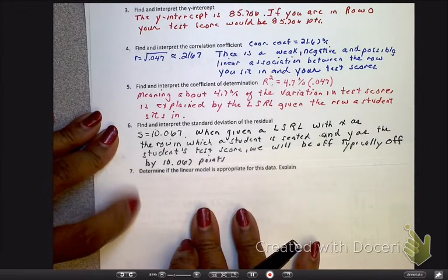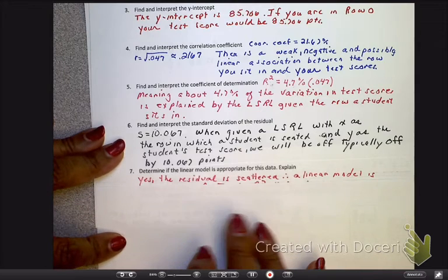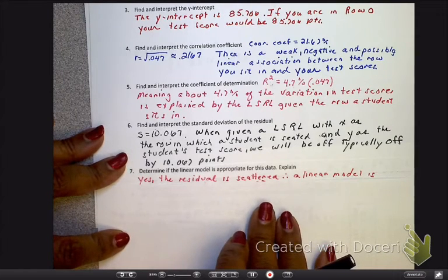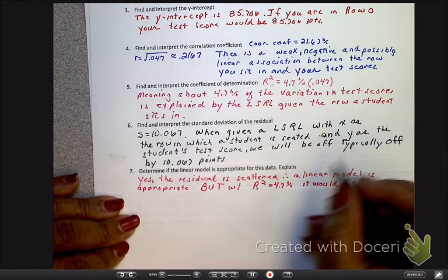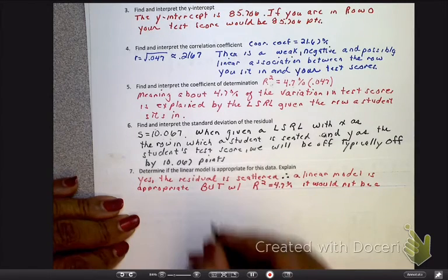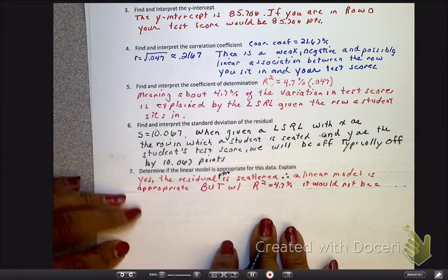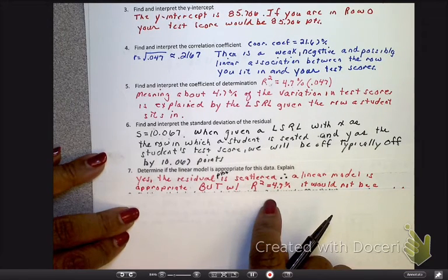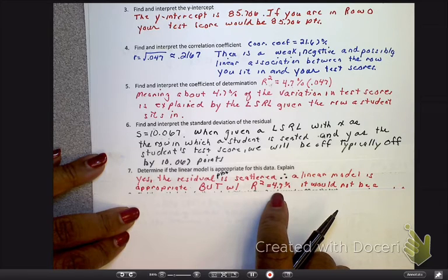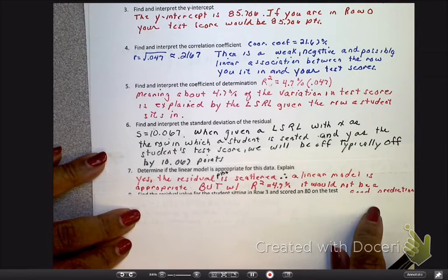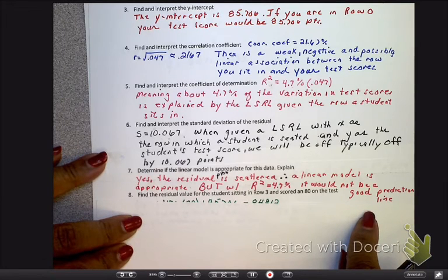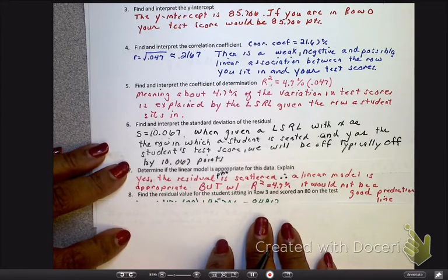Now, let's look at number 7. Determine if the linear model is appropriate for this data and explain. Well, the residual plot is scattered, and therefore, a linear model is appropriate. And I should have the word plot here. And I put but, we've got a really low R squared. Remember, we're saying 4.7% of the data of your test scores are explained by that line. So yeah, a linear model is appropriate, but I would not use this one to make a prediction off of. I wouldn't.